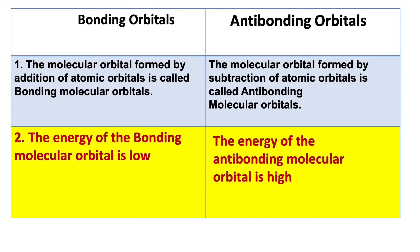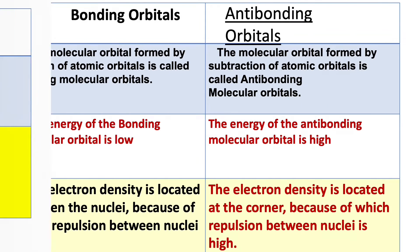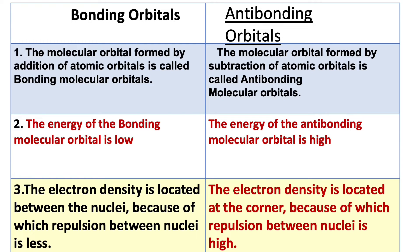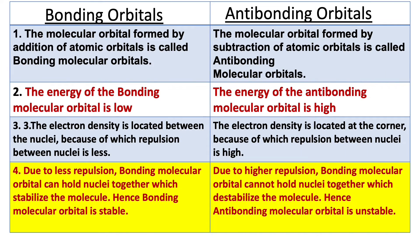The energy of the bonding molecular orbital is very low, whereas the energy of the antibonding molecular orbital is very high. In bonding orbitals, the electron density is located between the nuclei, because of which repulsion between the nuclei is less. But in antibonding molecular orbitals, the electron density is located away from the center, due to which the repulsion between nuclei is very high.